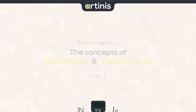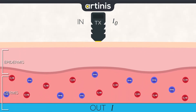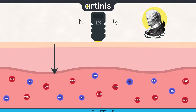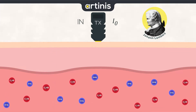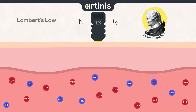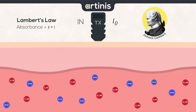For that, let's go back a few hundred years. In 1729, Lambert, a Swiss polymathematician, stated that absorbance depends on length. In other words, the level of absorbance by a tissue is dependent on the distance the light has to travel to go through it. Written as a formula, it gives absorbance equal to molecular extinction coefficient times length.